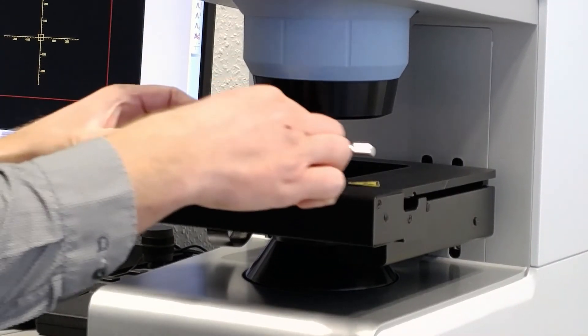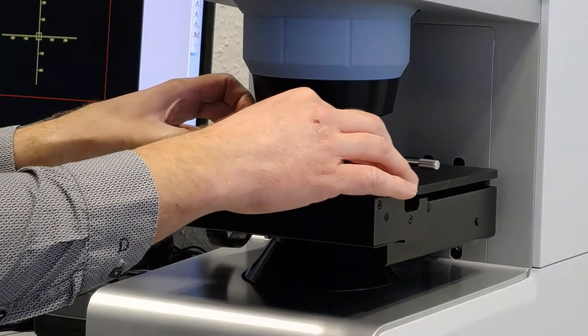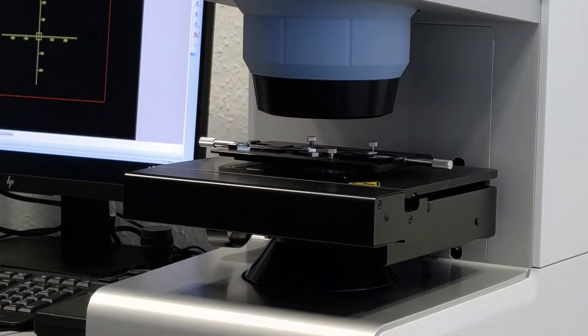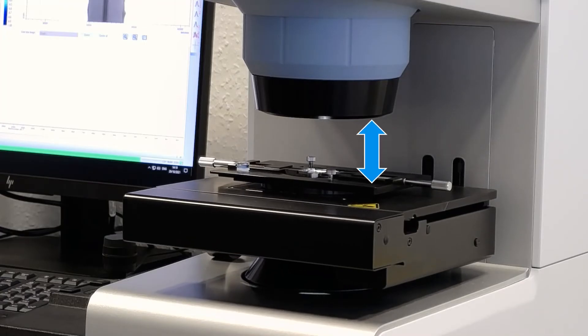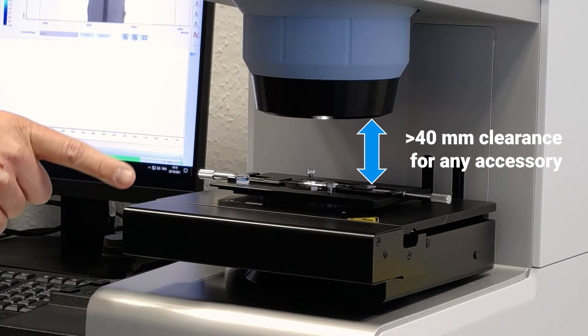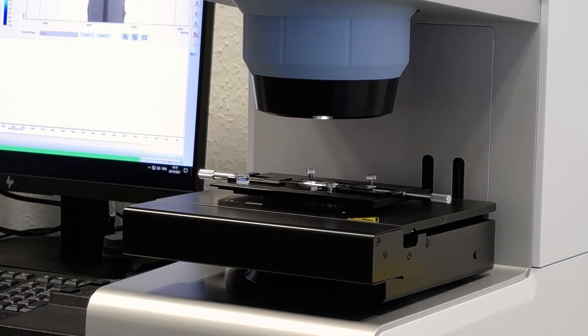The sample is analyzed using Bruker's Lumos II FTIR imaging microscope. First, the region of interest is selected with each red square representing 1024 IR spectra that are simultaneously collected. When we click start, the Lumos II automatically collects the IR data.